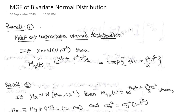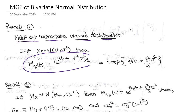Through this video we will learn the MGF of the bivariate normal distribution function. To find this, we need to recollect two ideas. The first is the MGF of the univariate normal distribution: if X follows a normal distribution with mean mu and variance sigma squared, then the MGF of X, denoted M_X(t), equals e to the power of mu*t plus t squared times sigma squared divided by 2.